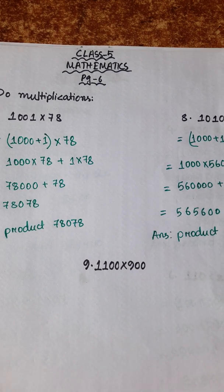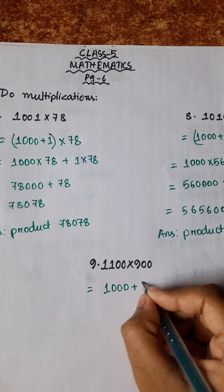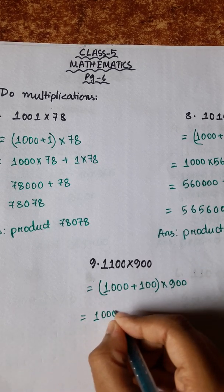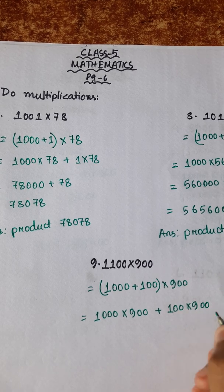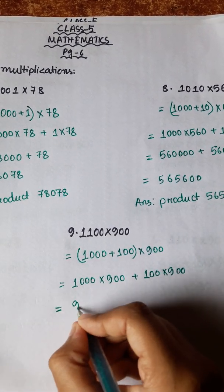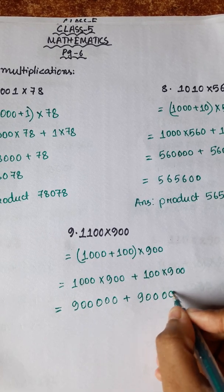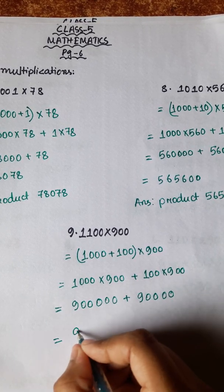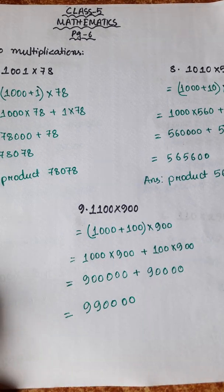Account number 9: 1,100 into 900. So, 1,100 means 1,000 plus 100. Therefore, 1,000 into 900 plus 100 into 900 equals 900,000 plus 90,000, which equals 990,000. Answer product: 990,000.